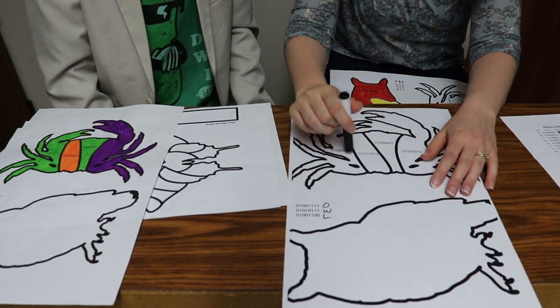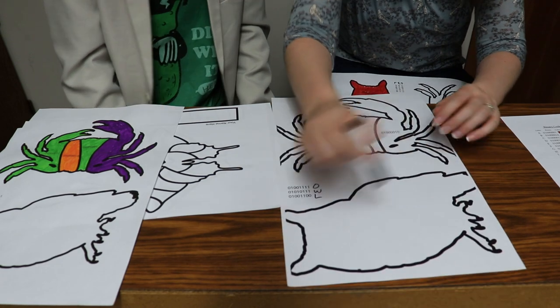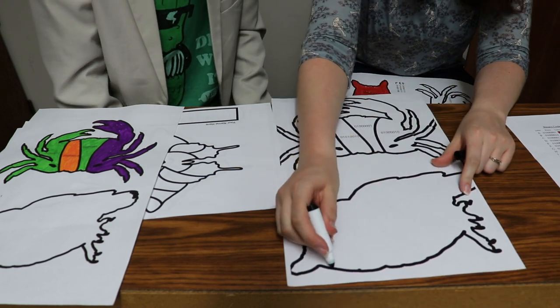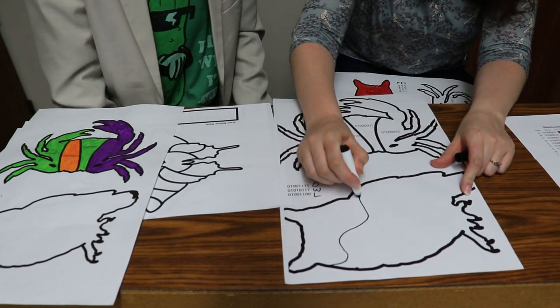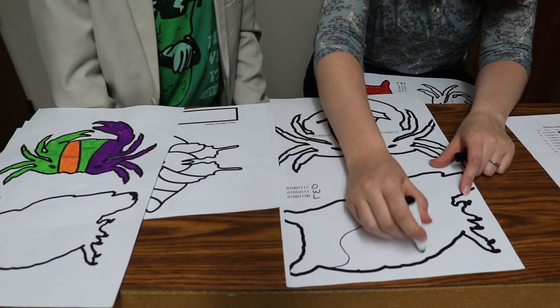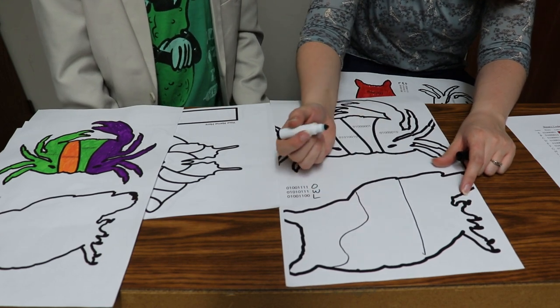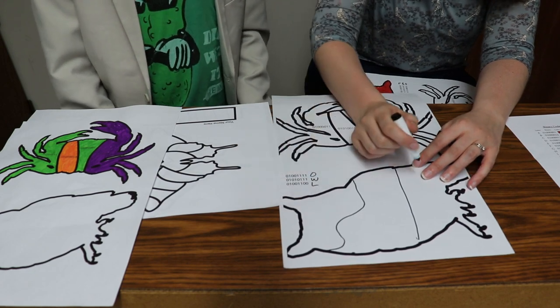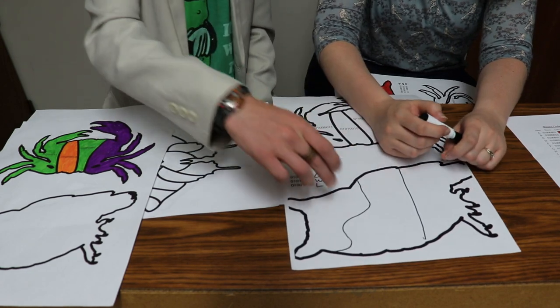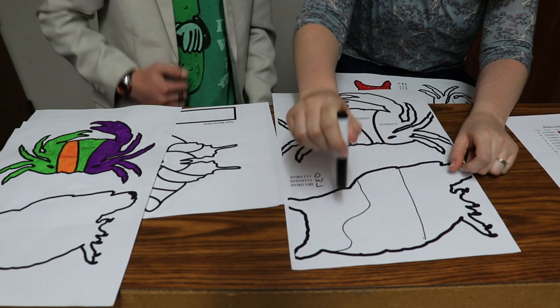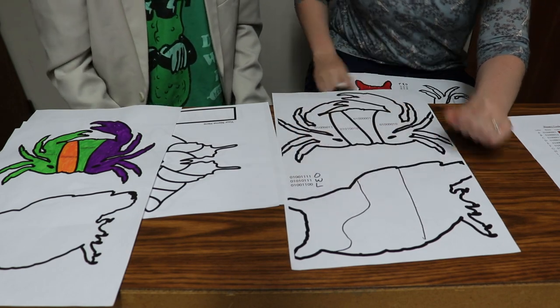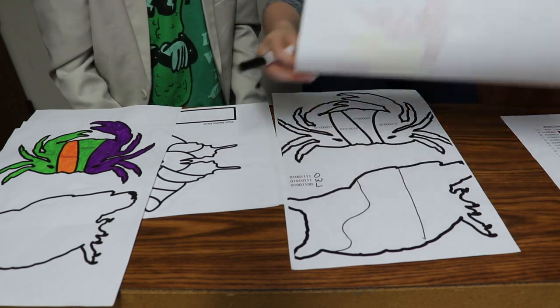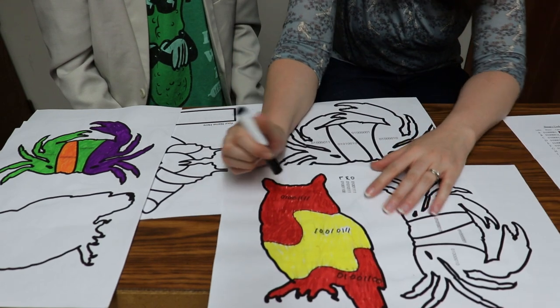And then what you want to do here is kind of what we did with the crab. You'll want to section it off and you can squiggle it or you can go straight across, it's totally up to you. And then you can write in the binary if you like but there still has to be three sections for each letter. One section per letter.